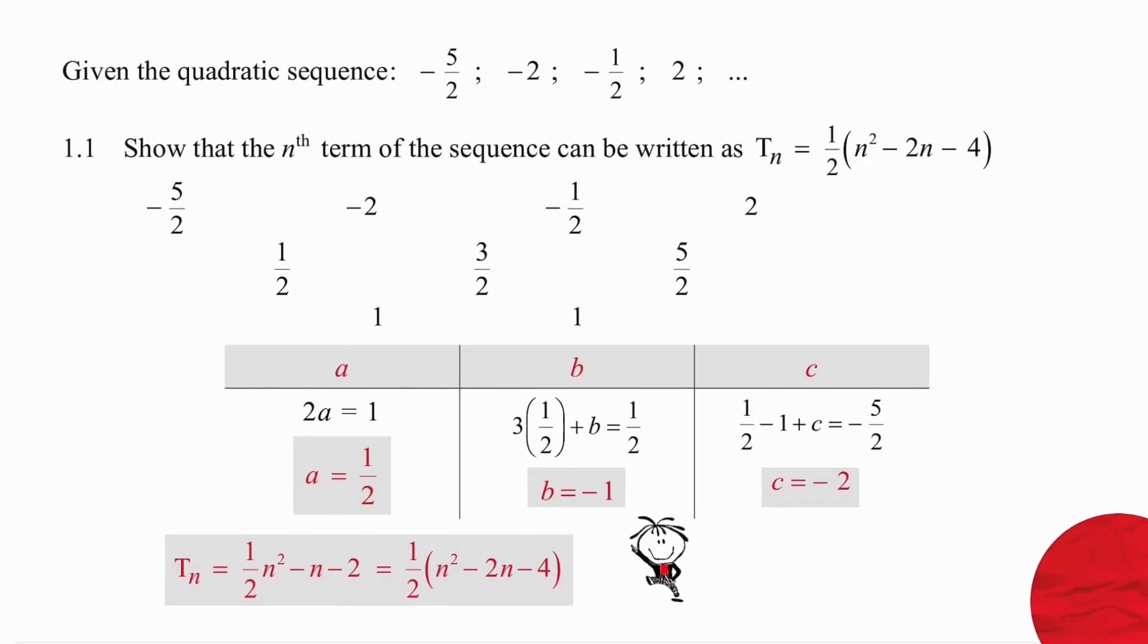To start with, we are simply asked to find the formula for the quadratic pattern. So we're going to write out the row of first and second differences. Then we're going to equate 2a to 1 and work out a equals a half. Using that result and equating 3a plus b with a half, which is the value of the first difference, we work out that b is minus one.